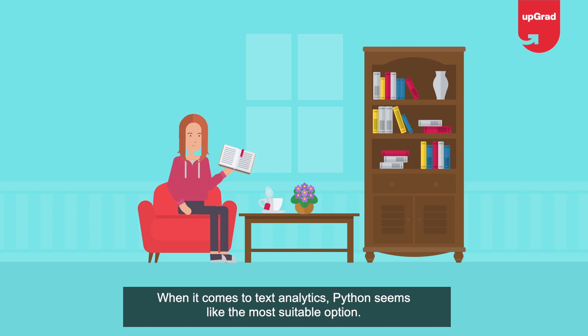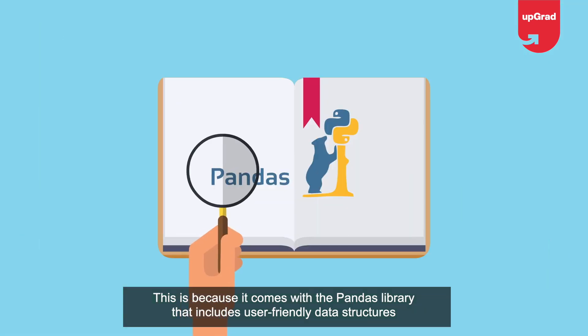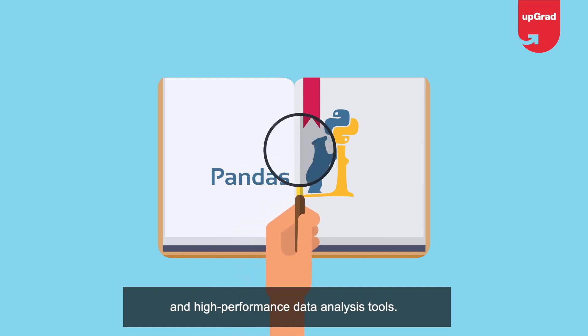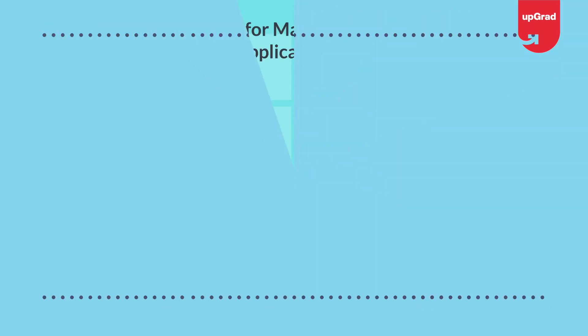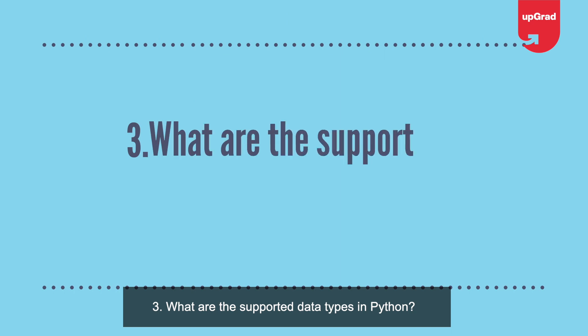Question 2: Python or R—which is better for text analytics? When it comes to text analytics, Python seems like the most suitable option because it comes with the Pandas library that includes user-friendly data structures and high-performance data analysis tools. R is best suited for machine learning applications.